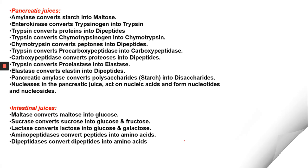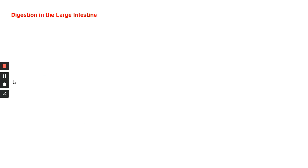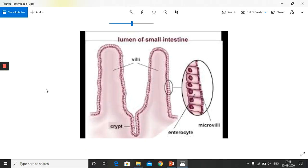Now let us see what happens after the food is digested in the small intestine — how is the digested food absorbed into the blood? Looking at the diagram of the inner wall of the small intestine, the wall is turned into invaginations called villi. Every villus has microvilli. Villi and microvilli help in the absorption of the digested food, and the digested food is sent to the bloodstream.